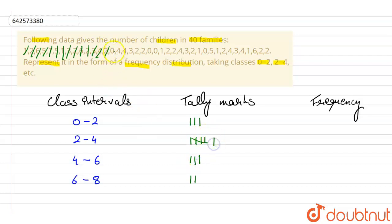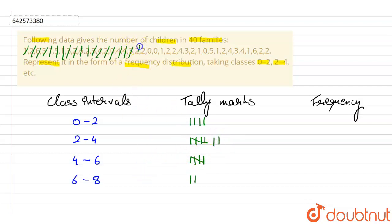Continuing the tally marks: 0 goes in 0 to 2; 4 goes in 4 to 6; 4 again in 4 to 6; 3 in 2 to 4; 2 in 2 to 4; 2 in 2 to 4; 0 in 0 to 2; 0 in 0 to 2.